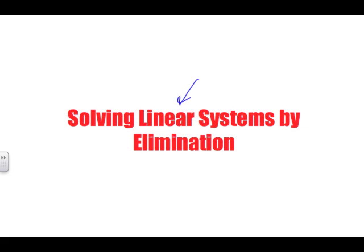Linear systems means straight lines. When we're solving, we're really trying to find x and y. When we talk about linear systems, it means we're looking at two or more straight lines that will hopefully cross one another, or be perpendicular to one another, or in fact be the exact same line.